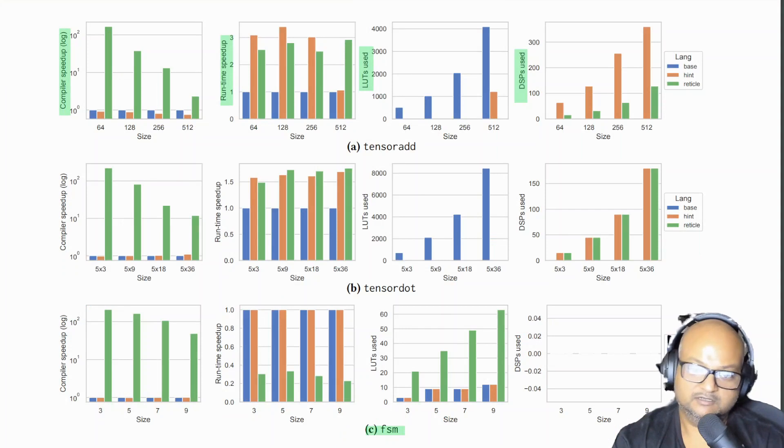They looked at three major things to compare. The first one was how fast the compiler was. The second one was the runtime of the functionality on the generated FPGA. And finally how much of the DSP or the special purpose hardware was used versus the lookup tables or the generic hardware on the FPGA.